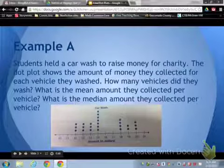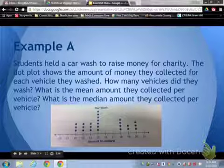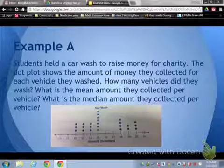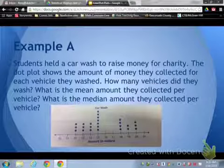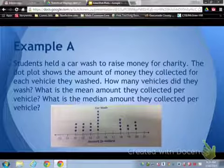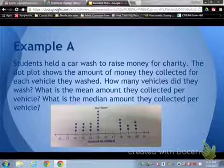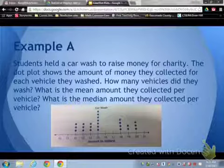For example, students held a car wash to raise money for charity. The dot plot shows the amount of money they collected for each vehicle they washed. How many vehicles did they wash? What is the mean amount they collected per vehicle? What is the median amount they collected per vehicle?